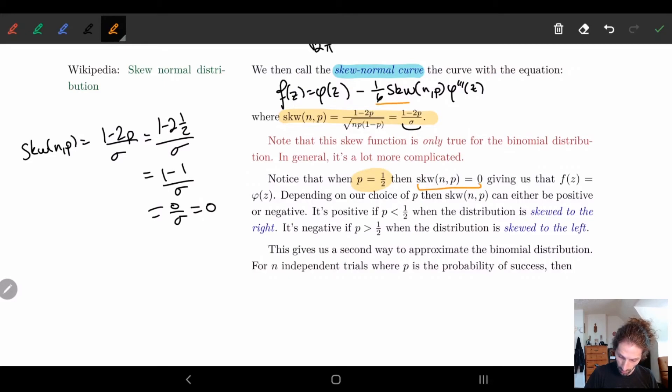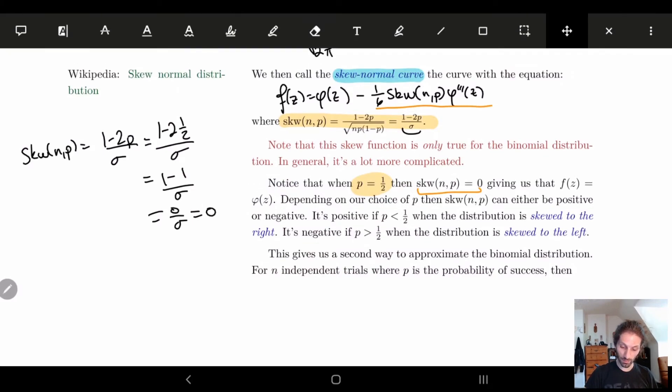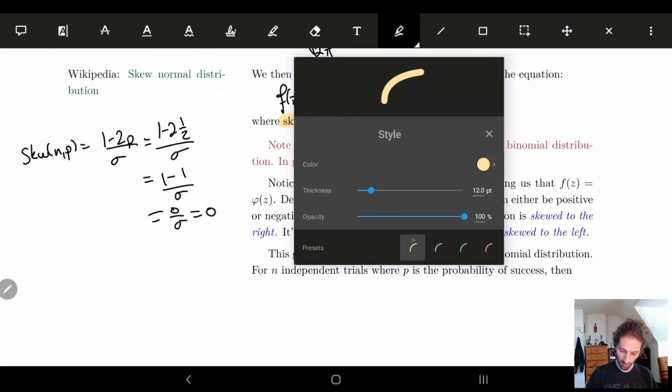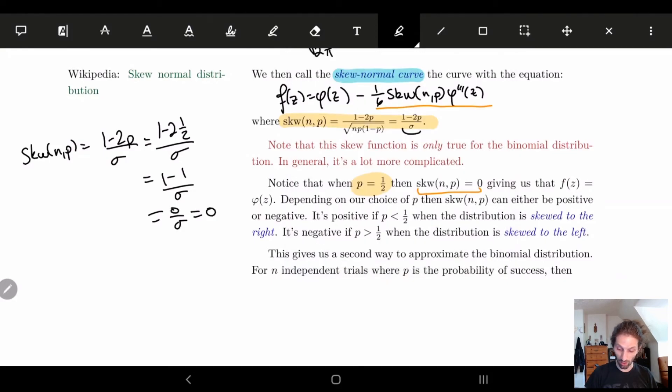And in particular, this whole little part here, it's 0 times something, so it's all going to be 0. So in other words, when p is equal to 0.5, we're not moving our function at all. There's no skew factor when p is equal to 0.5, which is nice. This is what we would expect because p equal to 0.5 is the good approximation.